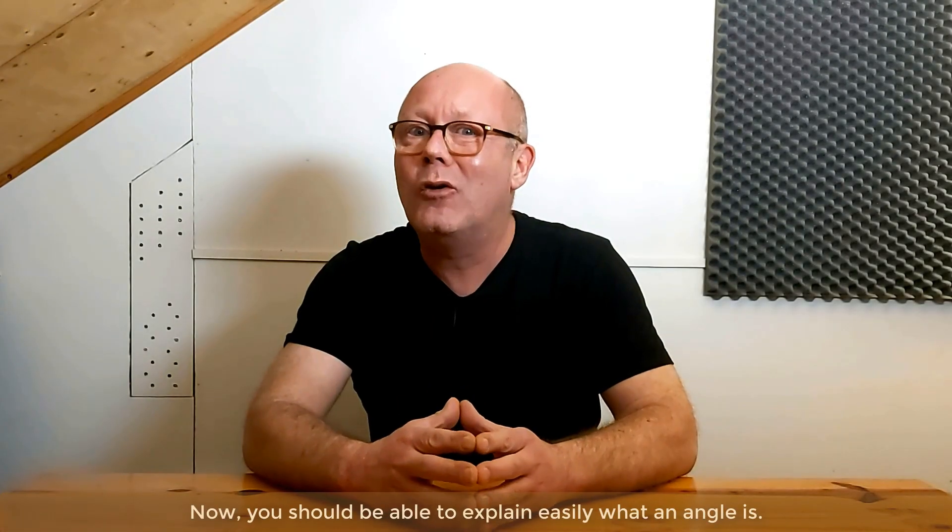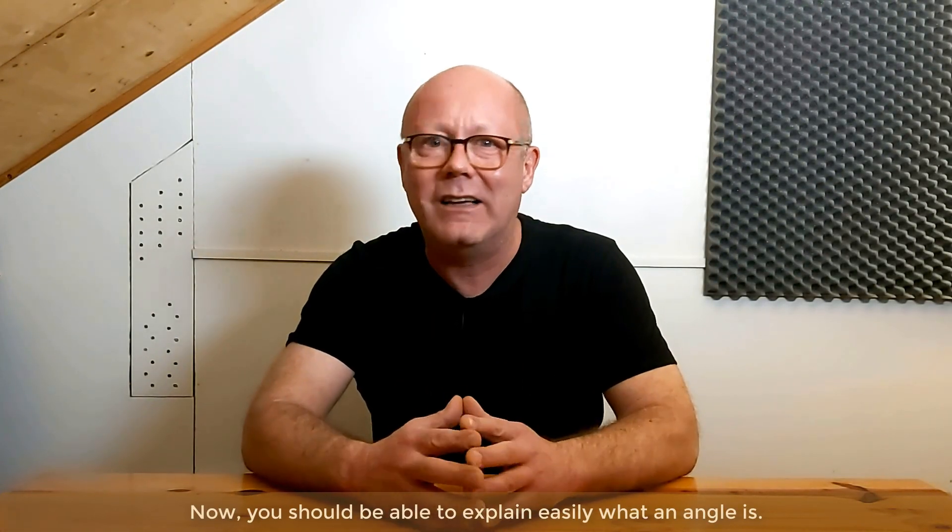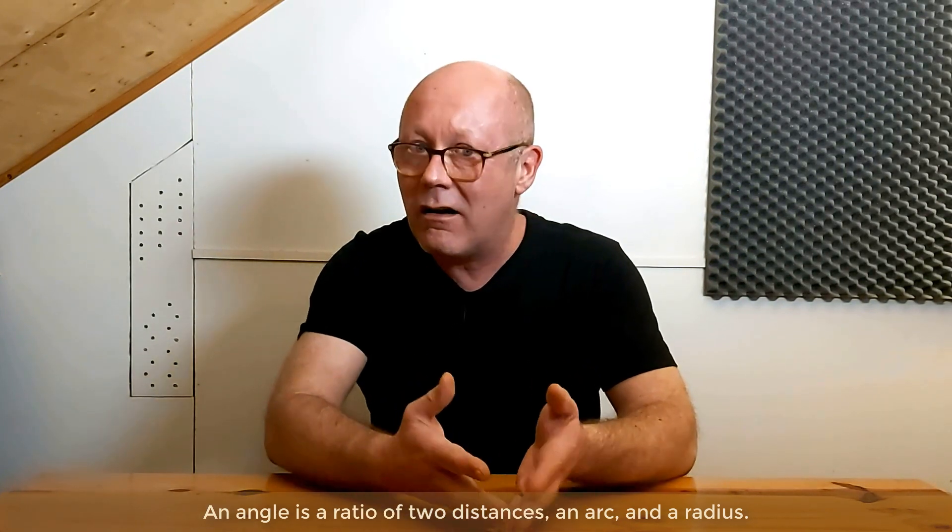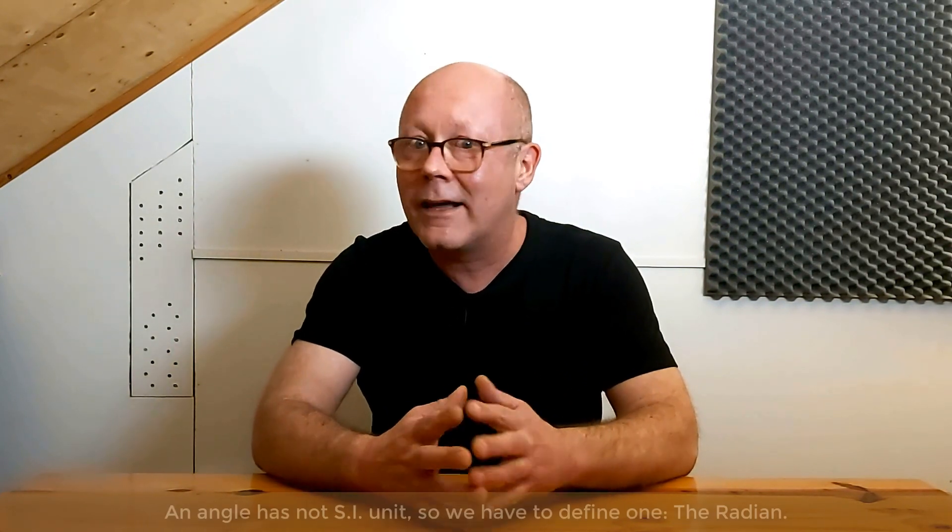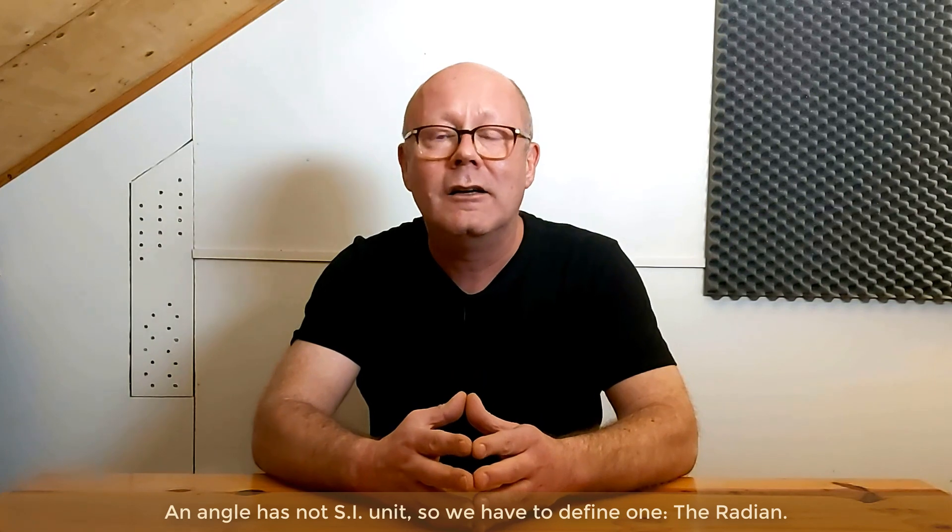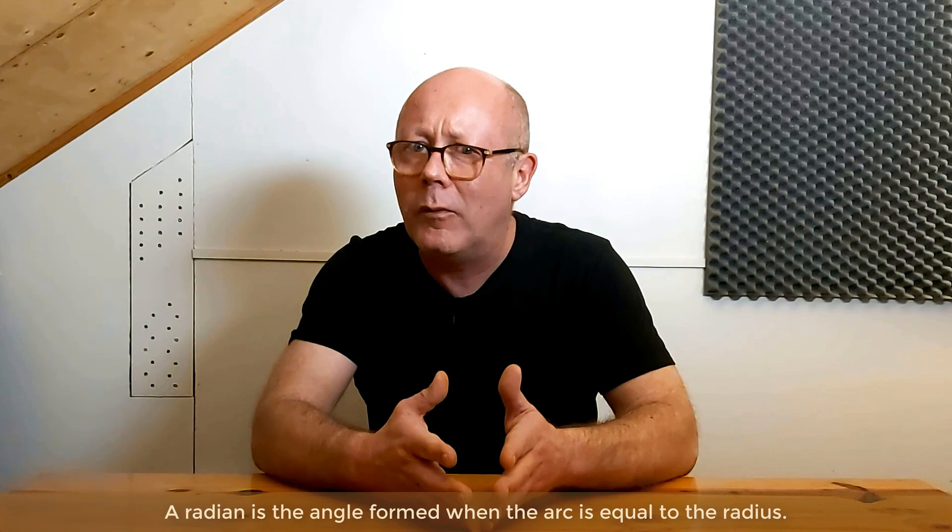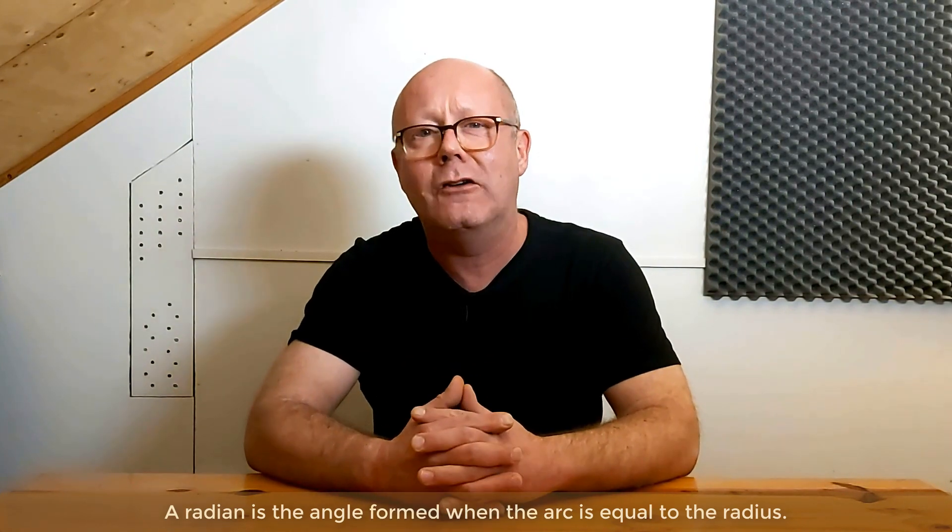Now, you should be able to explain easily what an angle is. An angle is a ratio of two distances, an arc and a radius. An angle has no SI unit. So we had to define one, the radian. A radian is the angle formed when the arc is equal to the radius.